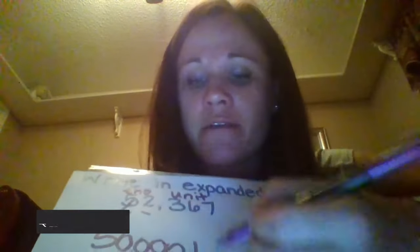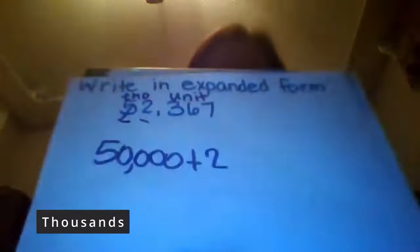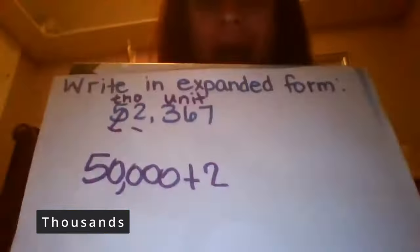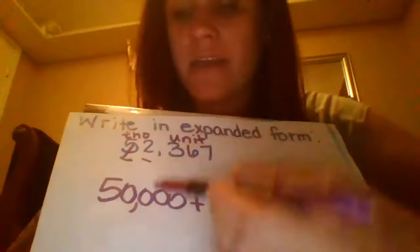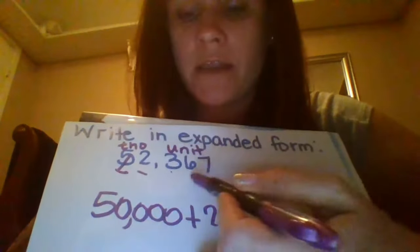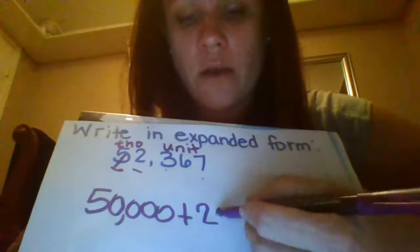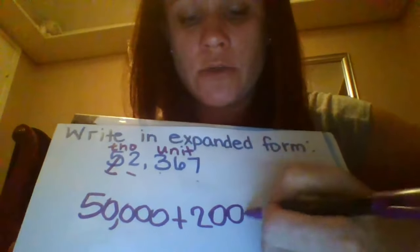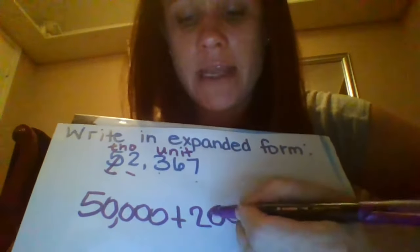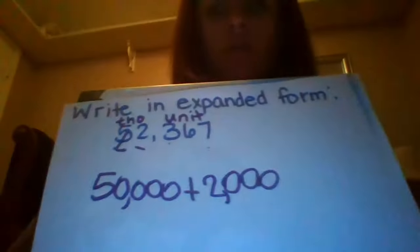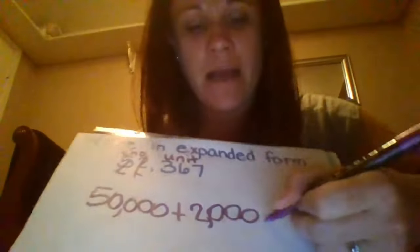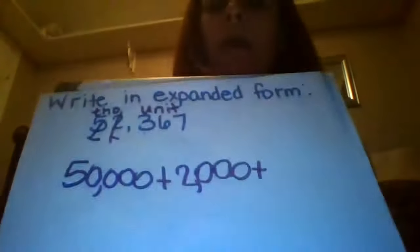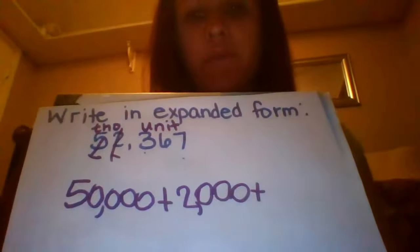Now I'm going to write the two. That two is in the one-thousands place, so I need to show that its value is two thousand. I'll write my two and then count how many zeros I need — one, two, three — so that two is worth two thousand. Now I can mark it off, and add another plus sign.